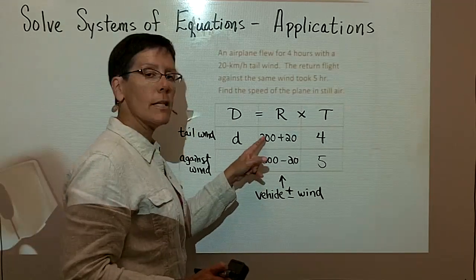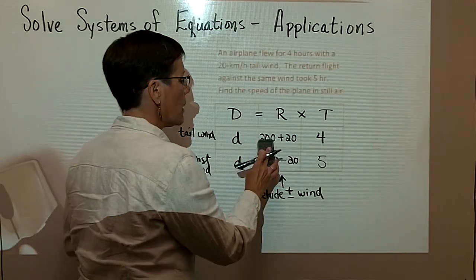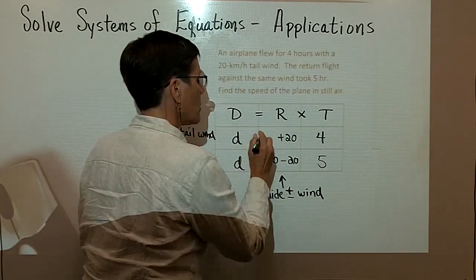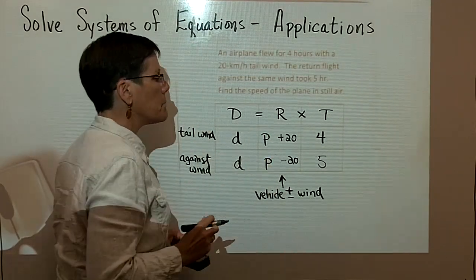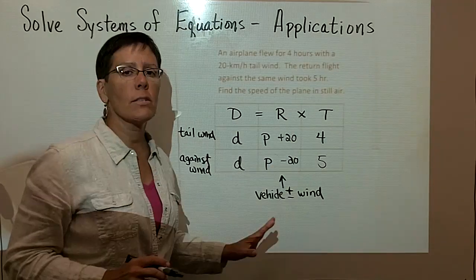Well, I don't really know that the plane is traveling at a speed of 200. I actually am looking to find out what that is. So I'm going to put a variable in here, the variable p. And now, because these boxes are all filled in, I'm going to go ahead and write my two equations.